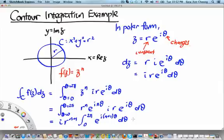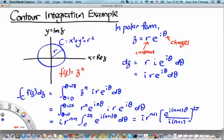Now how do we integrate something like this? That's actually quite easy. This equals i r to the n plus 1. Let's write down the integral that we will get by integrating e to the i n plus 1 theta. We will get back e to the i n plus 1 theta again, but we have to divide by i n plus 1.